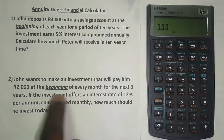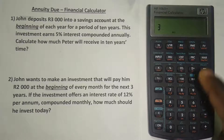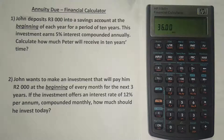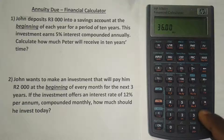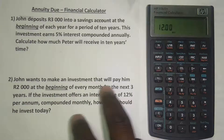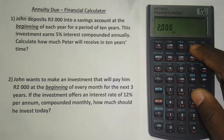The investment is for three years. Because the compounding is more than once per year, we don't just press 3 then N. We press 3, then the orange button, then N. This multiplies the number of years by the number of compoundings per year — 3 times 12 — giving us 36. Always do this when there's more than one payment per year. The interest rate is 12%, so press 12 then I/YR. The investment pays 2,000 rand per month, so press 2,000 and press PMT — leaving it as a positive since he's receiving the payment.